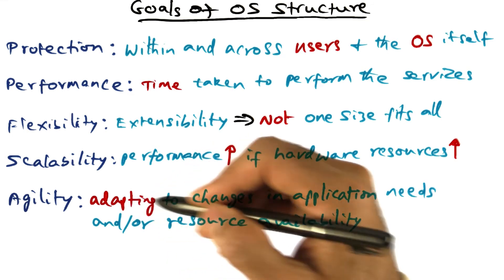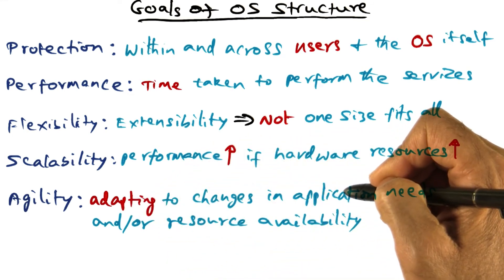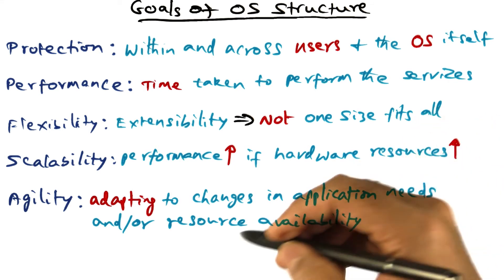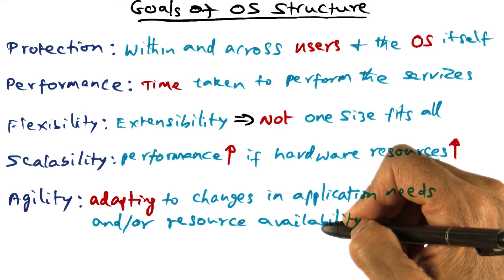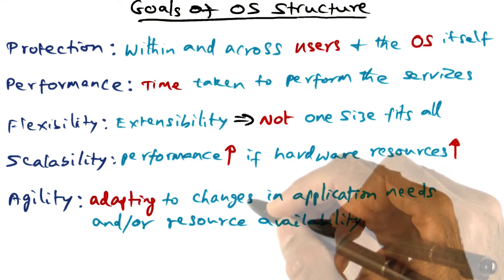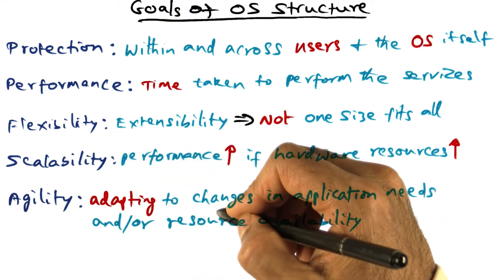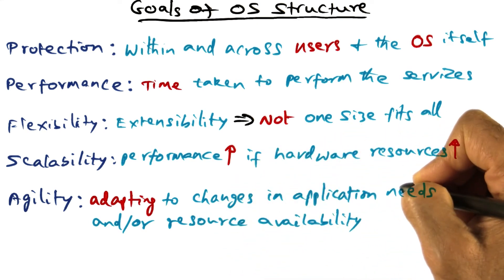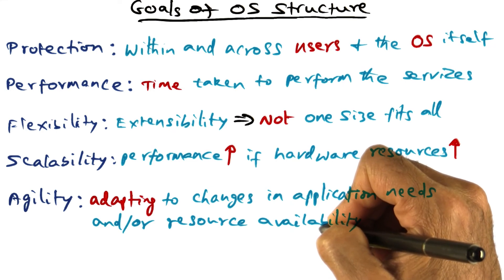Both the needs of the application may change over the lifetime of an application, and the resources available for the operating system to manage may change over time. Agility of the operating system refers to how quickly the operating system adapts itself to changes either in the application needs or the resource availability from the underlying hardware.